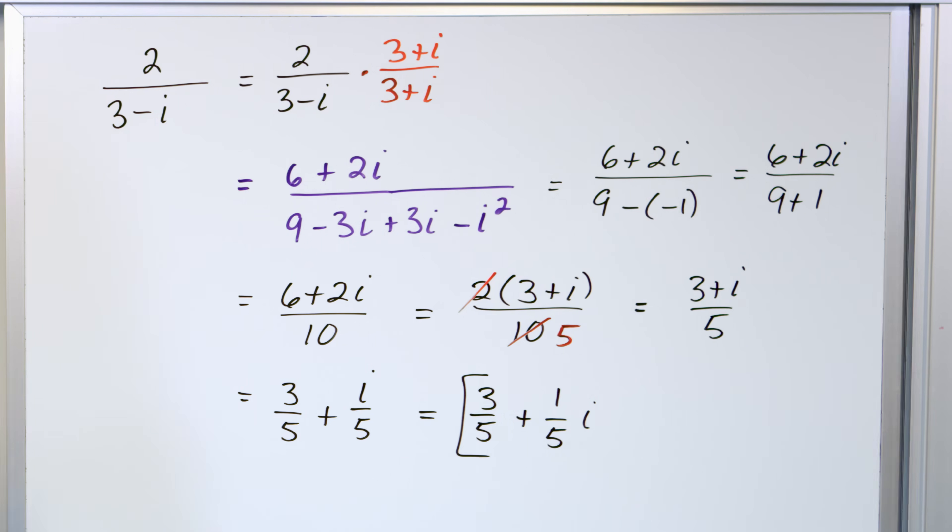Dividing complex numbers essentially becomes multiplication. Really, dividing any number becomes multiplication — eight divided by two can always be thought of as eight times one-half. You can always turn division into multiplication of something else. So we're dividing these complex numbers basically by doing multiplication, and that's how you divide complex numbers for now. Later we'll revisit this with a different technique.